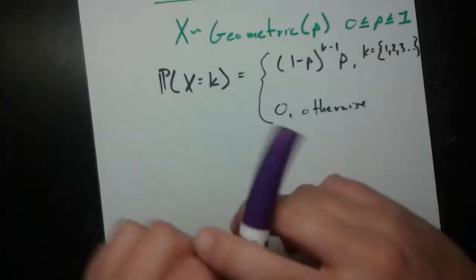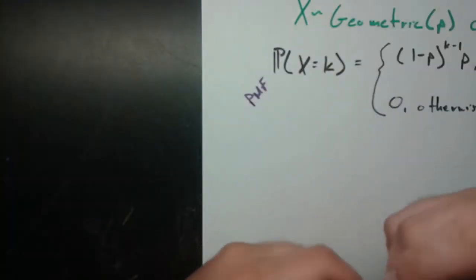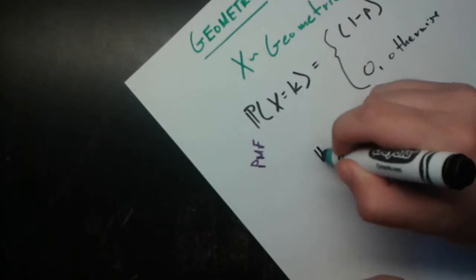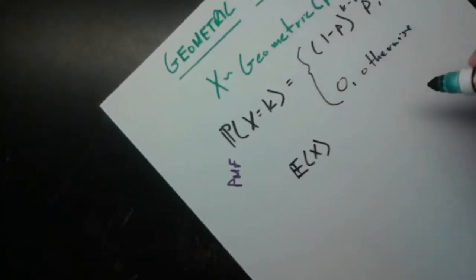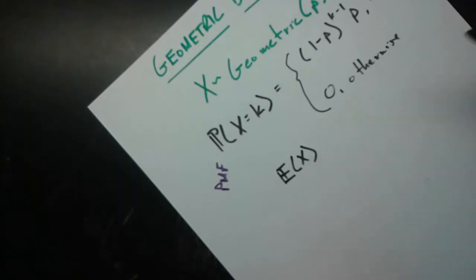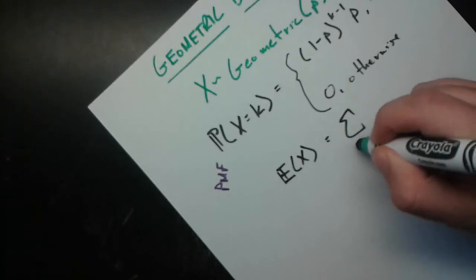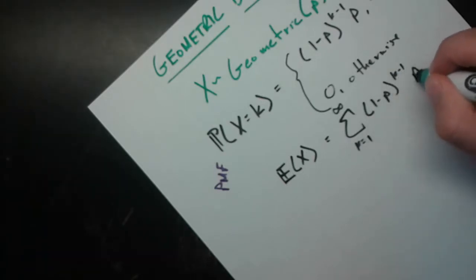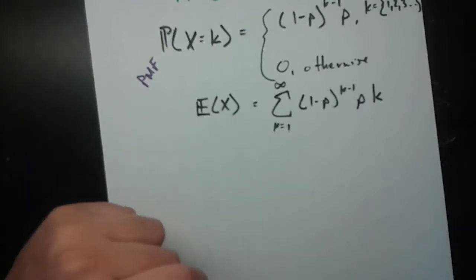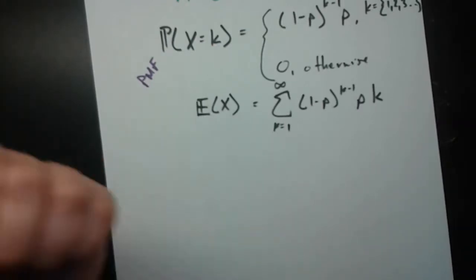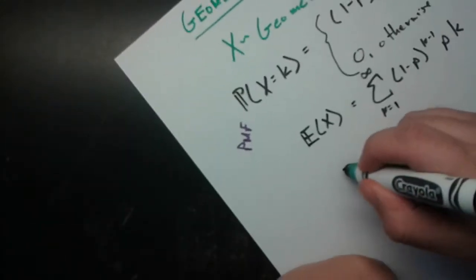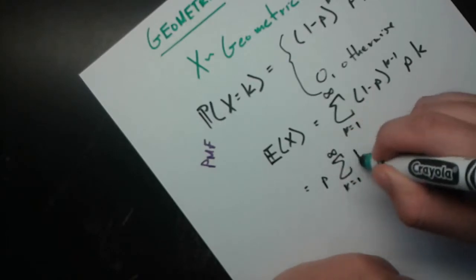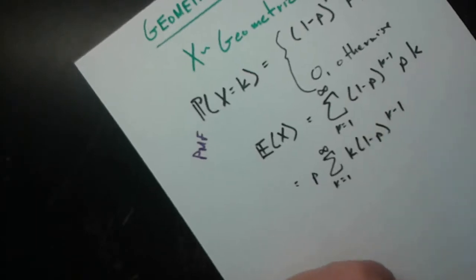That's the PMF of the geometric distribution. Now let's compute the mean and variance. For the expected value of X, we use the definition: sum over all k from 1 to infinity of k times (1 minus p) to the (k minus 1) times p. We'll use a useful trick — pulling the lone p out front — and we're left with the sum of k times (1 minus p) to the (k minus 1).